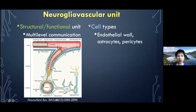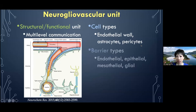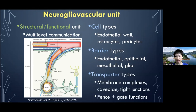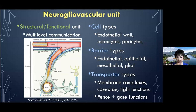The cell types involved in the NGVU are very complex and still under active research: endothelial wall, astrocytes, pericytes, and many different barrier types — endothelial, epithelial, mesothelial, and glial. There are also many different transporter types embedded in membranes — tight junctions, fence and gate functions — providing barriers both at the level of the cell membrane and between cells.